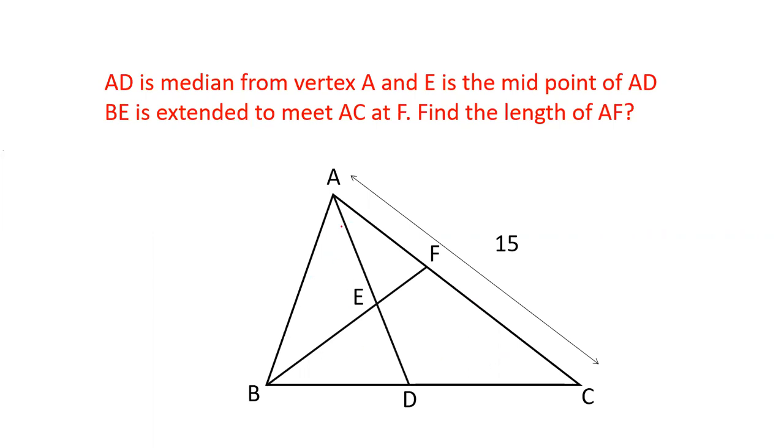The question is: ABC is a triangle and AD is the median of the triangle. E is the midpoint of AD. When BE is extended, it meets AC at F. The length of AC is 15 and we have to find out the length of AF.